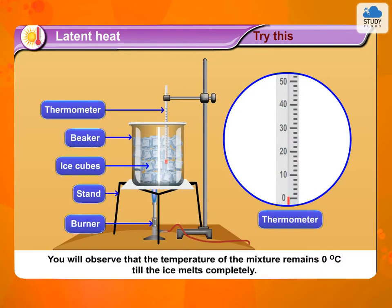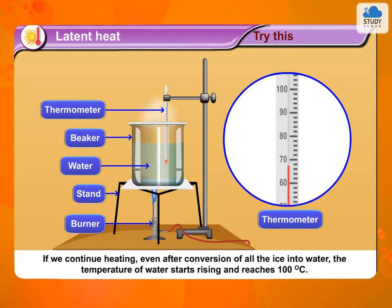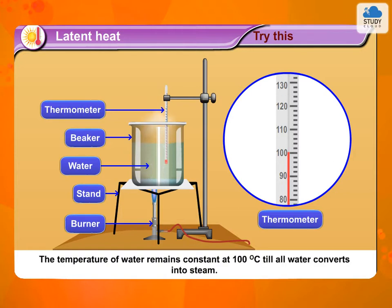You will observe that the temperature of the mixture remains 0 degrees Celsius till the ice melts completely. If we continue heating even after conversion of all the ice into water, the temperature of water starts rising and reaches 100 degrees Celsius. At this temperature, water starts converting into steam. The temperature of water remains constant at 100 degrees Celsius till all water converts into steam.